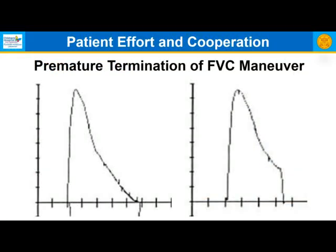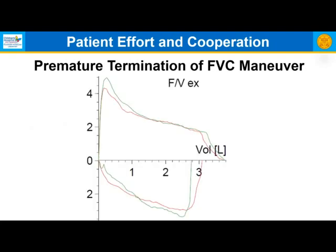Premature termination of a forced vital capacity maneuver: an acceptable flow-volume curve would show full exhalation. In contrast, a subject who stopped early shows premature termination indicated by a drop. Here's another example where both pre- and post-bronchodilator, the patient dropped off early — ordinarily, this would be expected to go out much further.